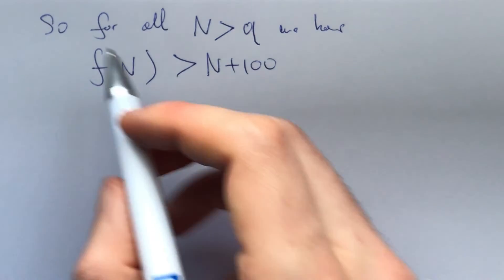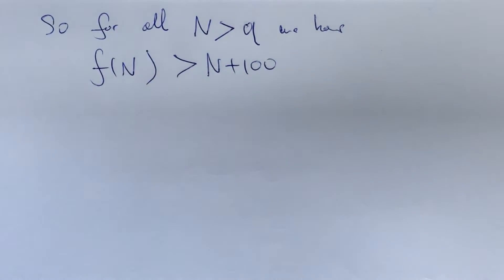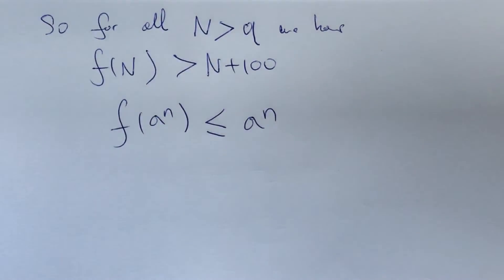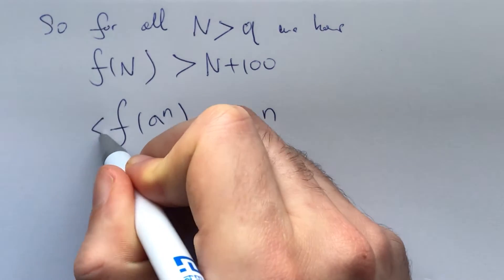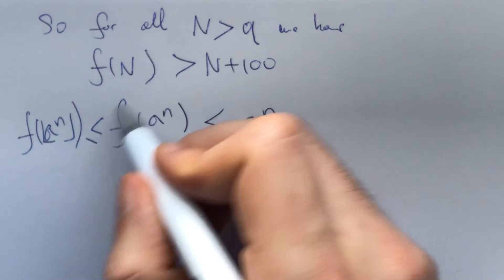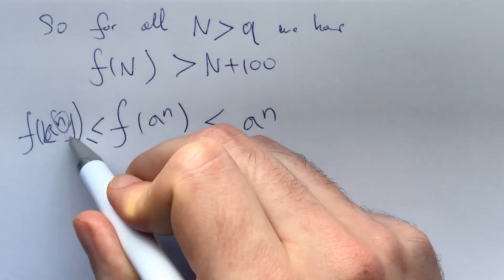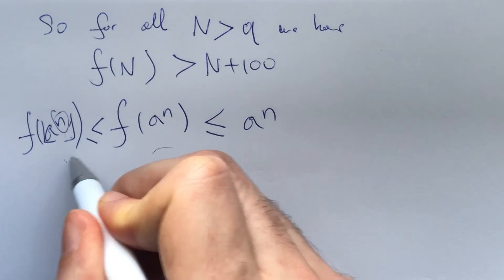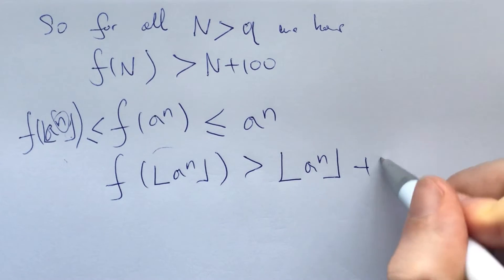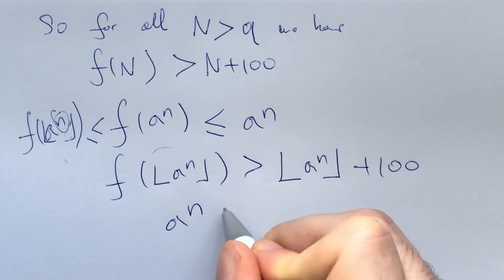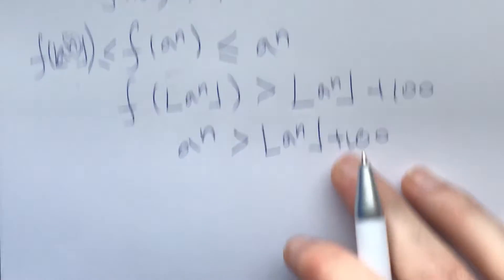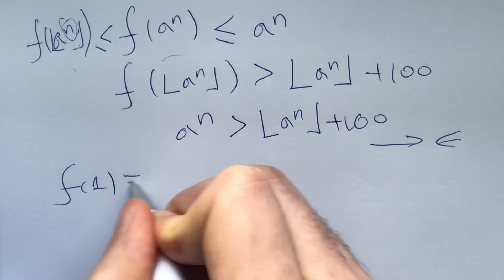For all n greater than q, we have f(n) > n + 100. But also f(a^n) ≤ a^n, and f(a^n) ≥ f(⌊a^n⌋). For large enough little n, a^n > q, so f(⌊a^n⌋) > ⌊a^n⌋ + 100. This gives a^n > ⌊a^n⌋ + 100, which is impossible since ⌊a^n⌋ ≥ a^n − 1, making 0 > 99 — a contradiction. Therefore f(1) = 1.